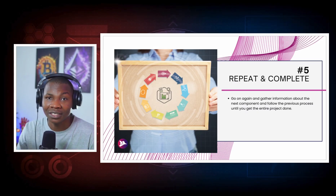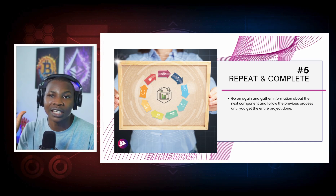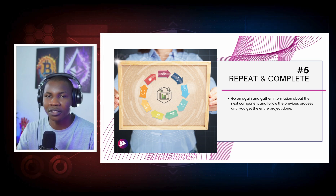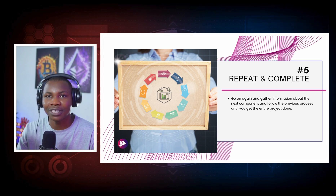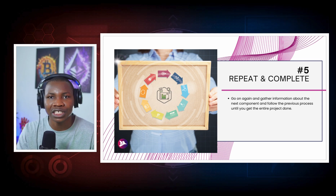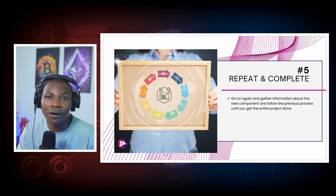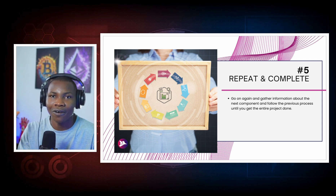The fifth step is to repeat that process for all the other components in the particular project you have chosen. After you achieve one component, you do it again — you do your research, you go through the process of gathering information and solving that problem. When you have issues, you research, apply the knowledge you're getting, and once you achieve that component, you go again until you finish all your components.